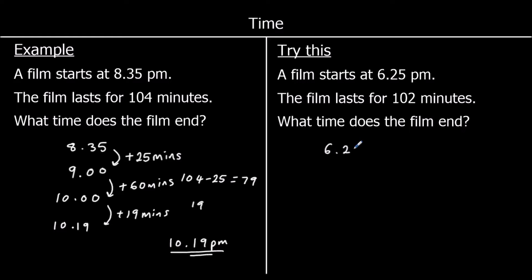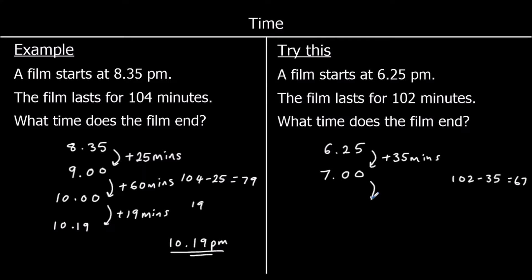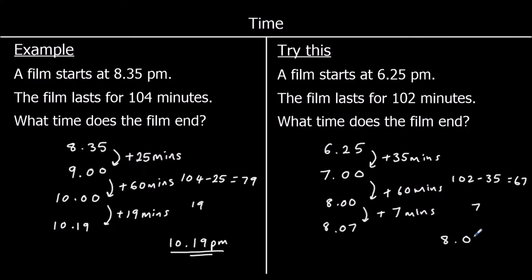So we're at 6.25. How many minutes until 7? That will be 35 minutes. And then how many minutes do we have left? 102 take away 35 — if I took away 32 that would get me to 70, and take away 3 more, so 67. So I've got 67 minutes left. 60 minutes is an hour, so I can go to 8 o'clock by adding 60 minutes, and then I've got 7 left. Add on 7 more minutes and that gets us to 8.07pm.